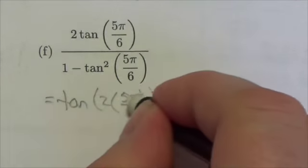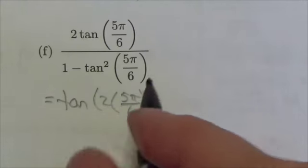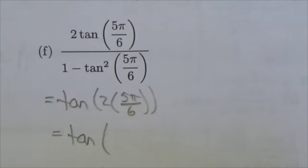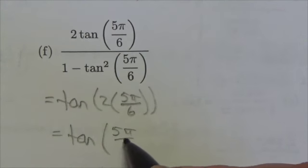Whoops. Sorry. I'm already anticipating the final answer. There should be 5π over 6. 2 times 5π over 6. Now, when you multiply that by 2, the 5π over 6 is going to become 5π over 3.